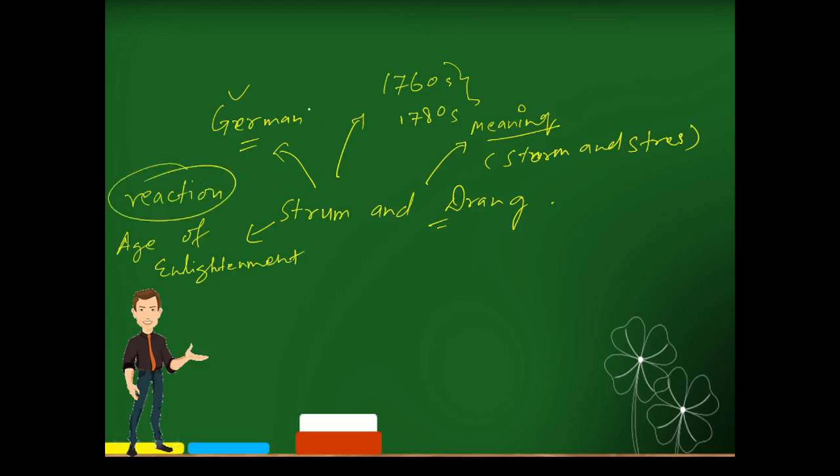So it was a German movement that lasted between 1760s and 1780s. The meaning of the movement, Sturm und Drang, was storm and stress, and this movement was against or a reaction against Age of Enlightenment. These are important things. Now let's talk about the literature.